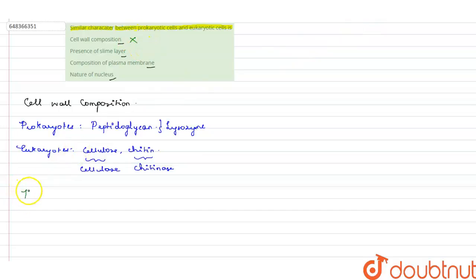Second, presence of slime layer. Bacterias, prokaryotes have this sticky layer around them called glycocalyx, which offers stickiness to prokaryotes. All bacteria are prokaryotes.